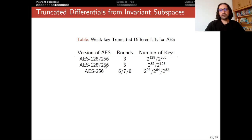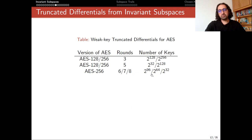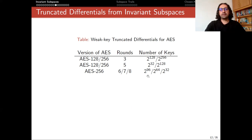For AES-256, we have more freedom because there are more weak keys. Due to the key schedule of AES-256, we can increase the length of this distinguisher, but the number of possible weak keys decreases. For six rounds there are 2^96 weak keys, for seven rounds 2^64 weak keys, and for eight rounds 2^32 weak keys.